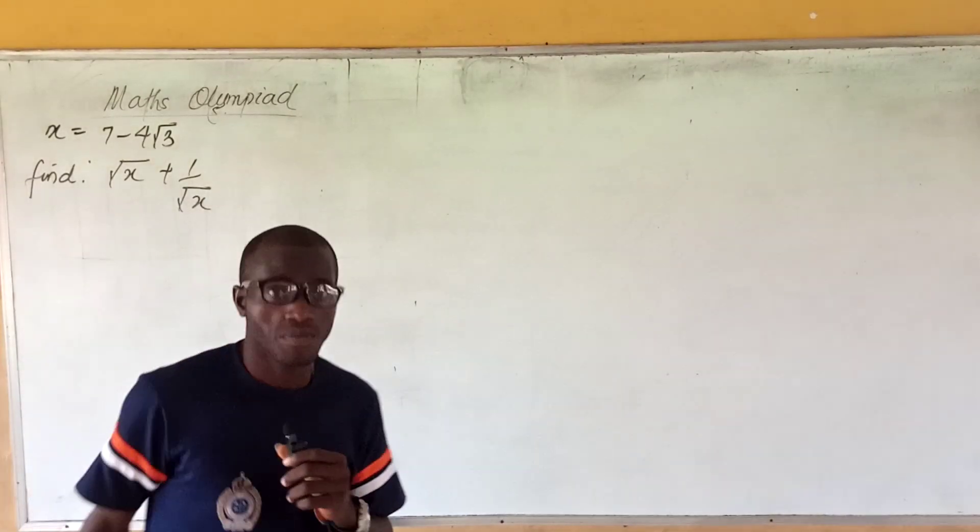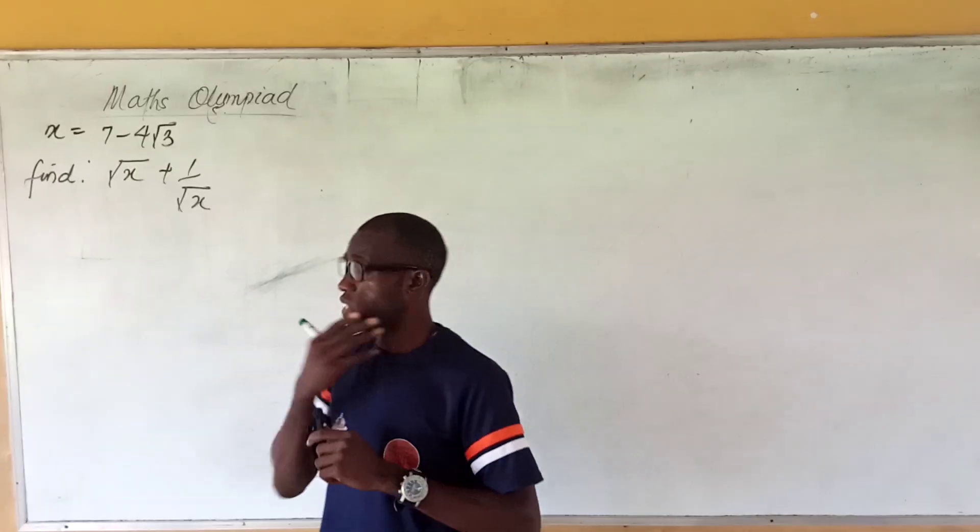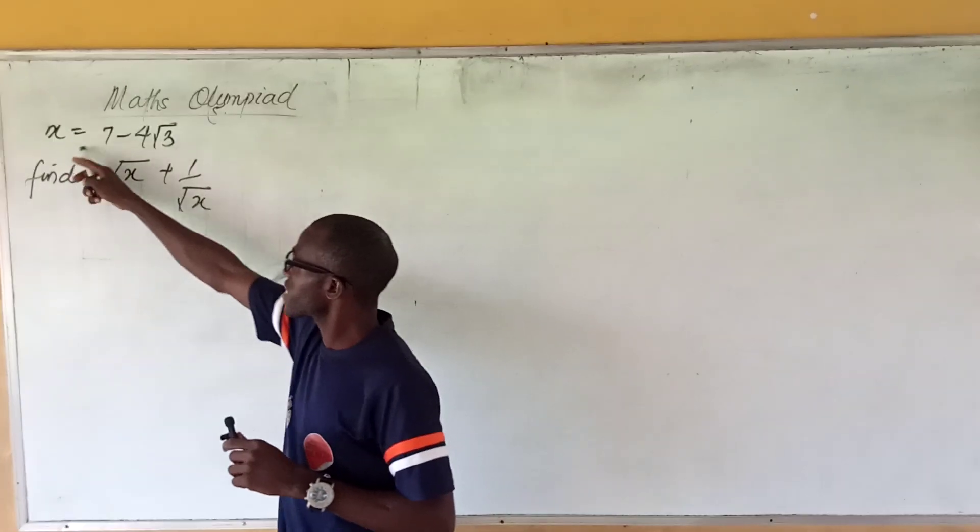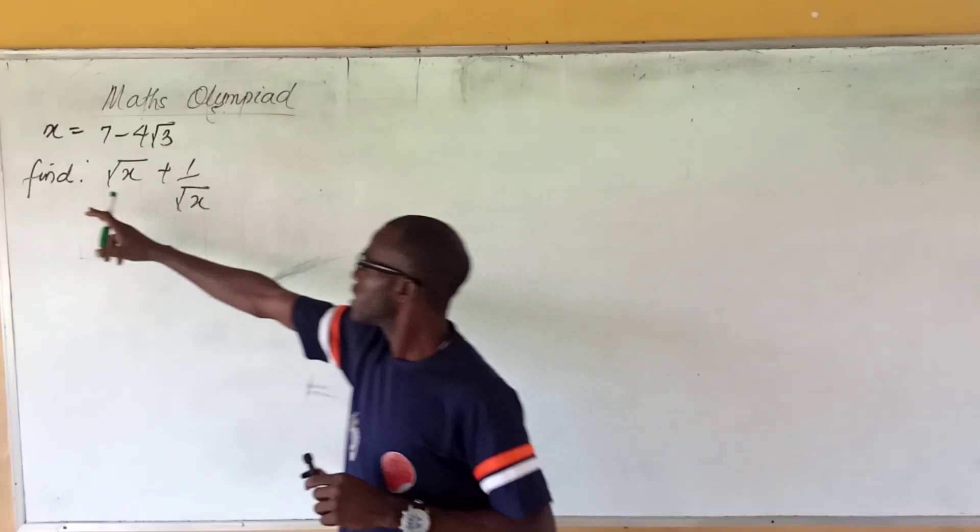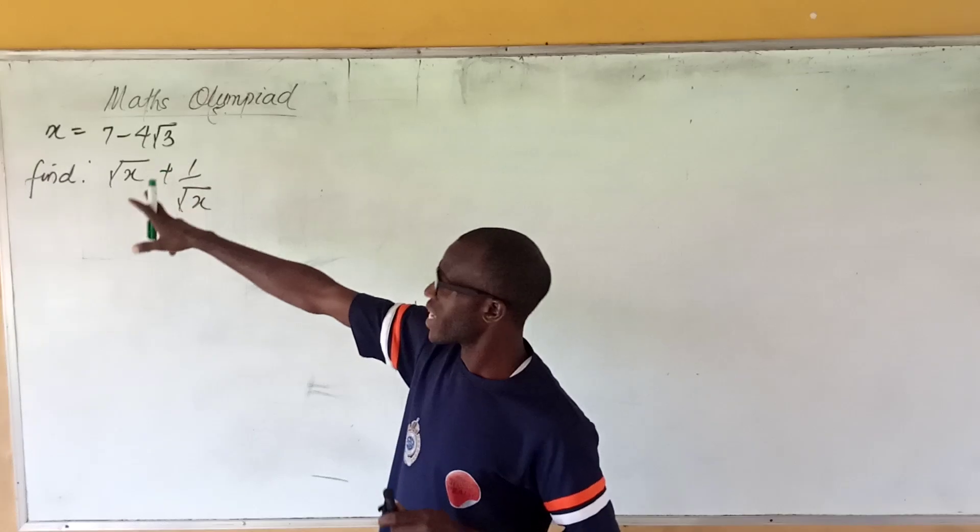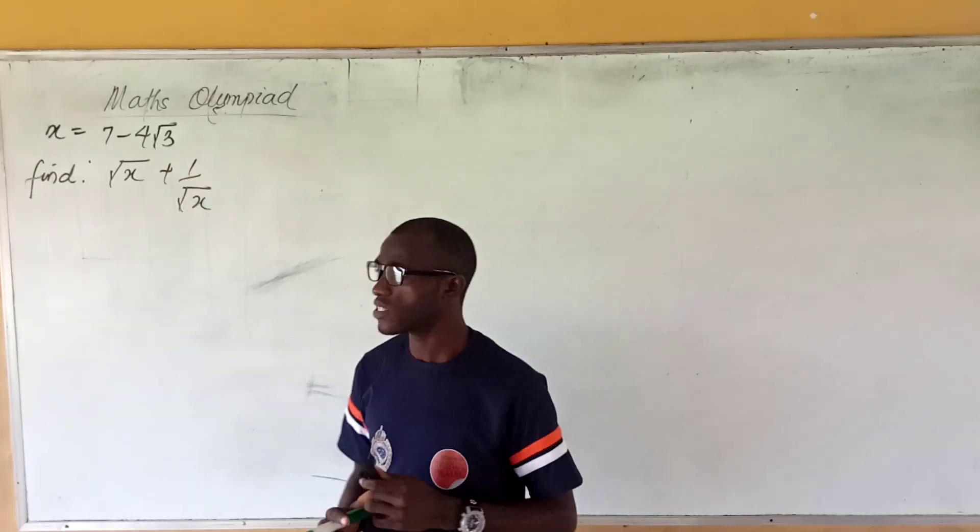Hi there, welcome back to this channel. Let us resolve another question. The question says that x is equal to 7 minus 4√3. Now you have to find √x + 1/√x.